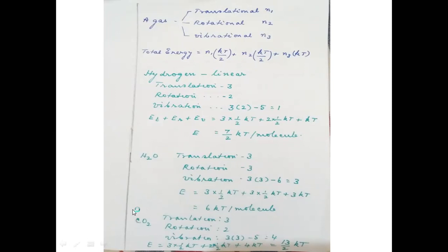Carbon dioxide CO₂ has three atoms like water but is a linear molecule, unlike water which is nonlinear. So translation = 3, rotation = 2 (the rotation about the C–O bond axis is negligible), and vibrational modes = 3×3 − 5 = 4. Total energy = 3×(½kT) + 2×(½kT) + 4×kT = 13/2 kT per molecule.